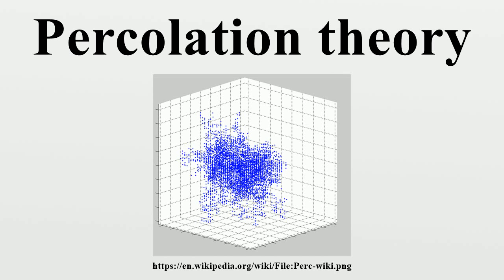Universality. The universality principle states that the value of Pc is connected to the local structure of the graph, while the behavior of clusters below, at, and above Pc are invariant with respect to the local structure, and therefore in some sense are more natural quantities to consider. This universality also means that for the same dimension, independent of the type of the lattice or type of percolation, the fractal dimension of the clusters at Pc is the same.